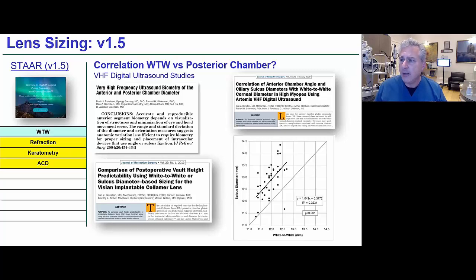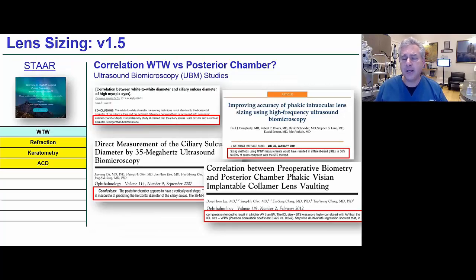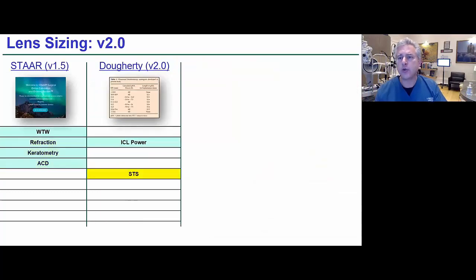Yes, there is a correlation, but there are a lot of outliers from the expected correlation line. All of the UBM studies, which have lower resolution and lower repeatability, still came to this conclusion, and it led to sulcus-to-sulcus sizing.